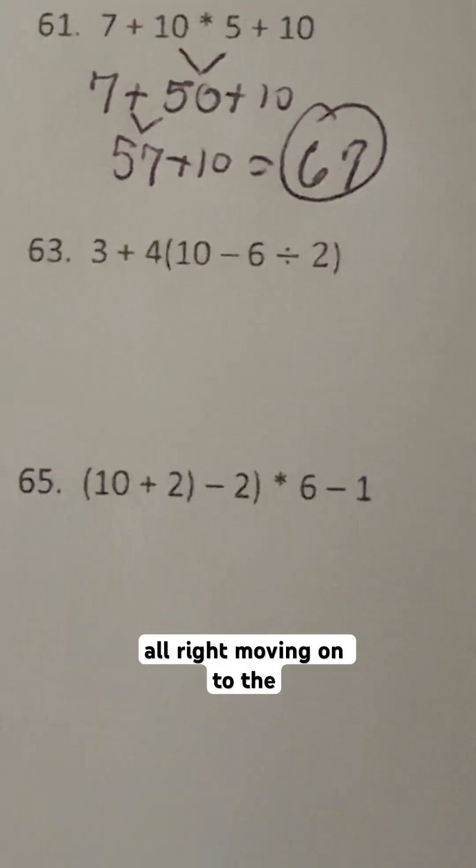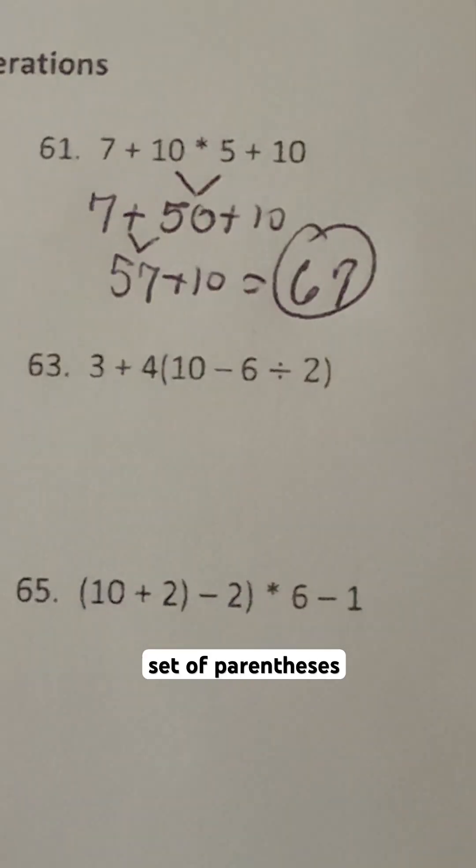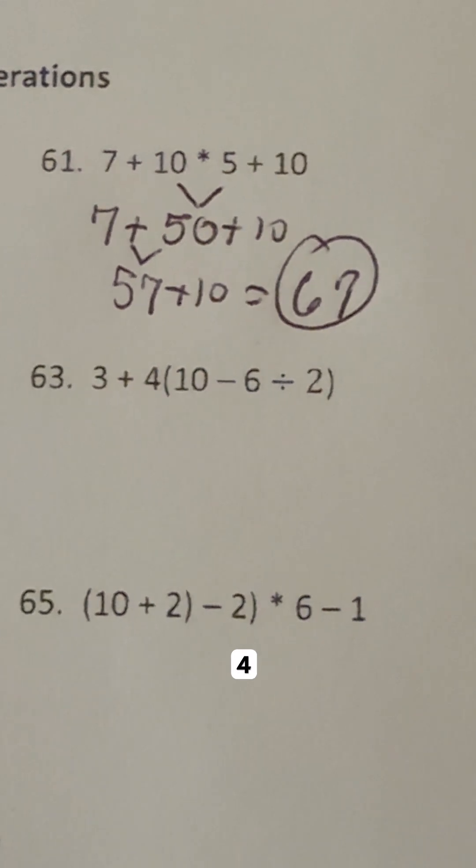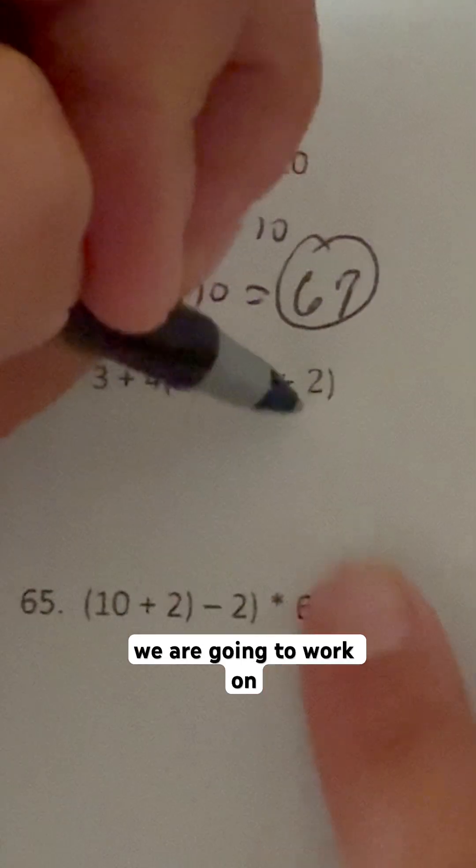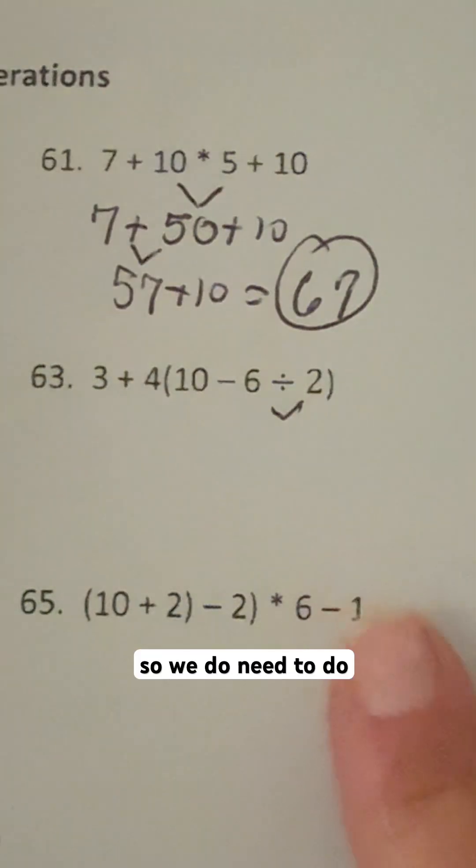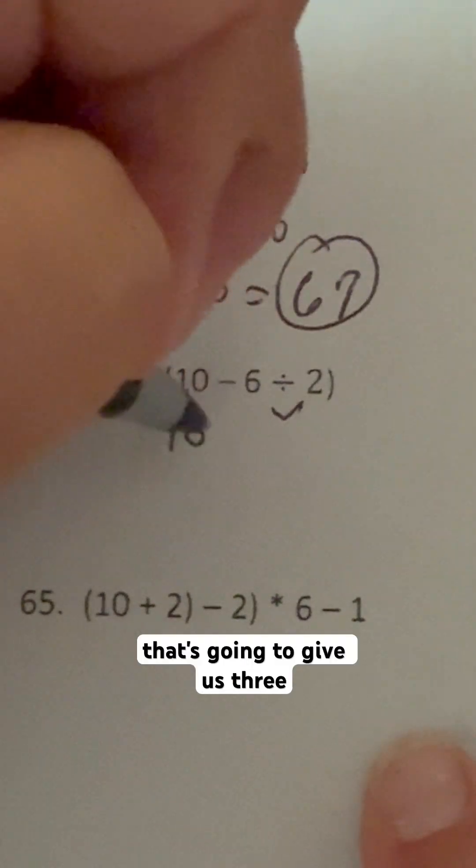All right, moving on to the next one. We do have a set of parentheses. We have 3 plus 4, and then in parentheses, 10 minus 6 divided by 2. Inside that parentheses, we are going to work on the division part first. So we do need to do that 6 divided by 2 portion, and that's going to give us 3.